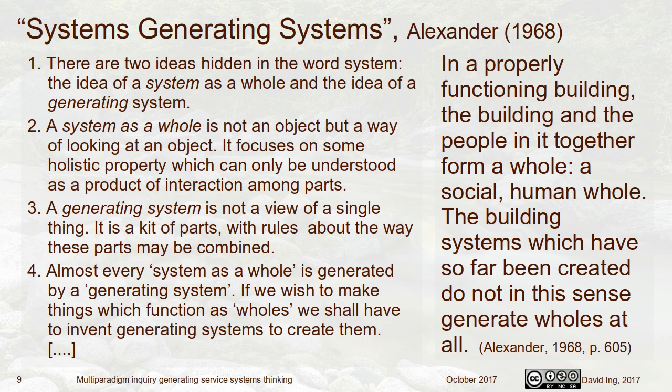A system as a whole is not just an object but focuses on holistic properties. A generating system is parts with rules about how they may be combined. In architecture, Schumacher distinguishes autopoiesis — self-generating — from allopoiesis, like a factory production line where the car doesn't reproduce itself. Alexander writes in 1968: 'In a properly functioning building, the building and the people in it together form a social human whole. The building systems we have created so far do not generate wholes at all.' Max Jacobson asked me yesterday if Aix-en-Provence was beautiful — but is it generative? Those are different questions.